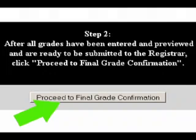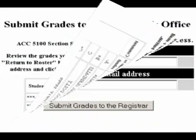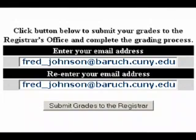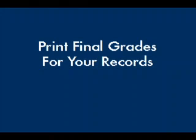Once I'm done grading, I'll choose the Proceed to Final Grade Confirmation button. After verifying the grades, I'll enter my email address twice and click on Submit Grades to Registrar. Before WebGrade sends the grades, I'll be prompted to confirm that I actually want to submit the data — this helps protect against inadvertent submissions. Once I've submitted my grades, WebGrade presents me with a copy of my final grade roster that I can print for my records.